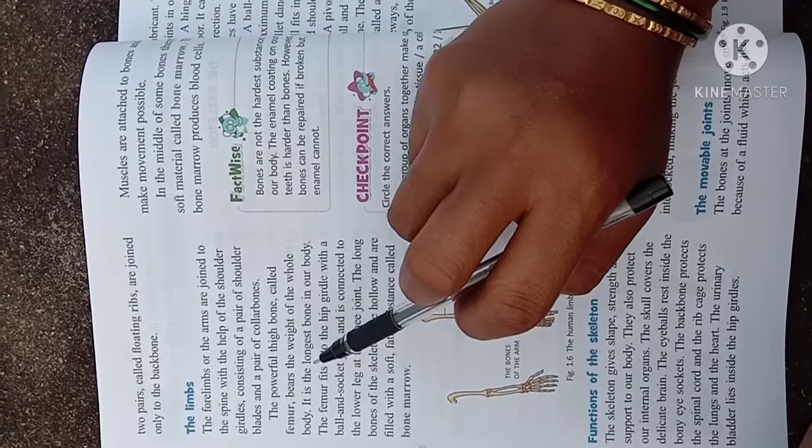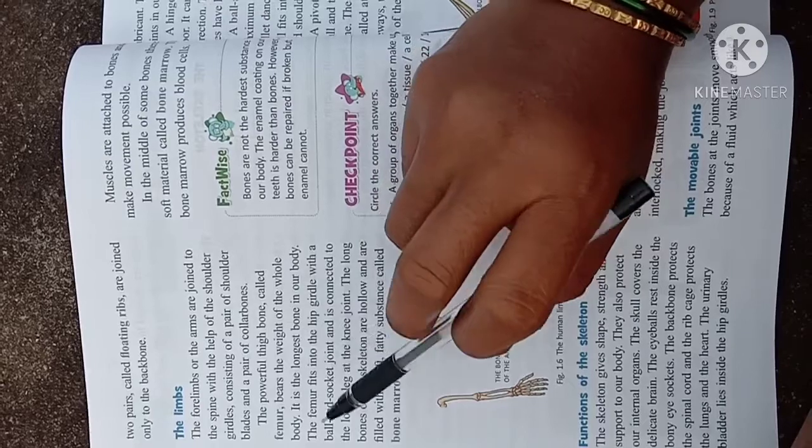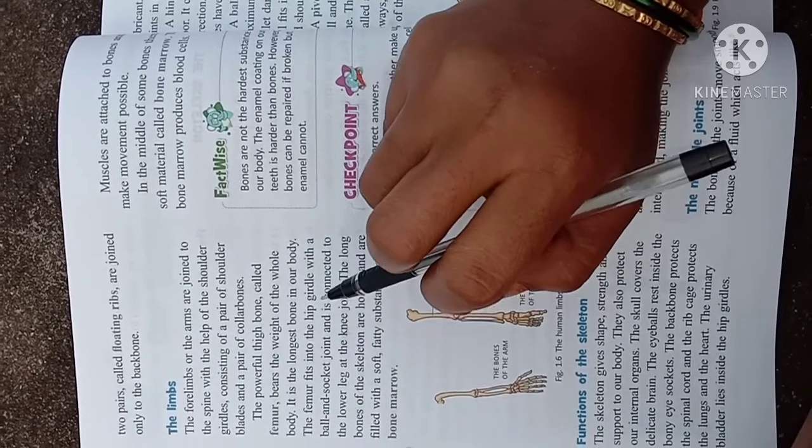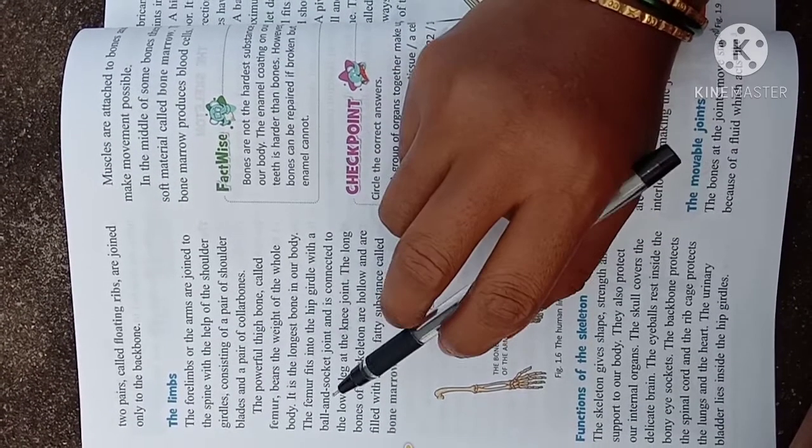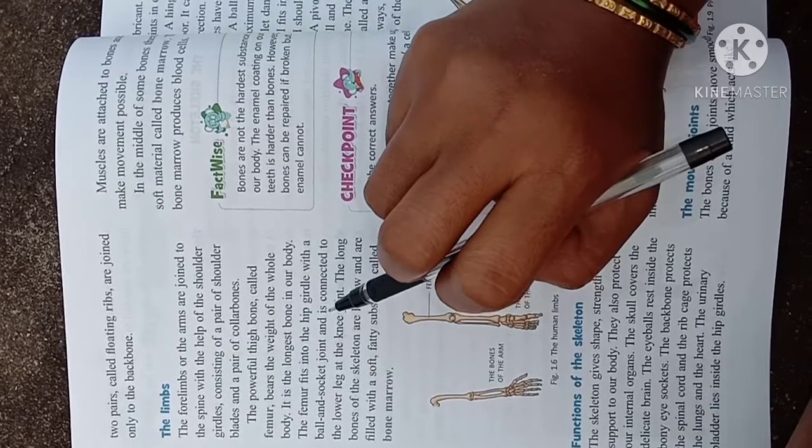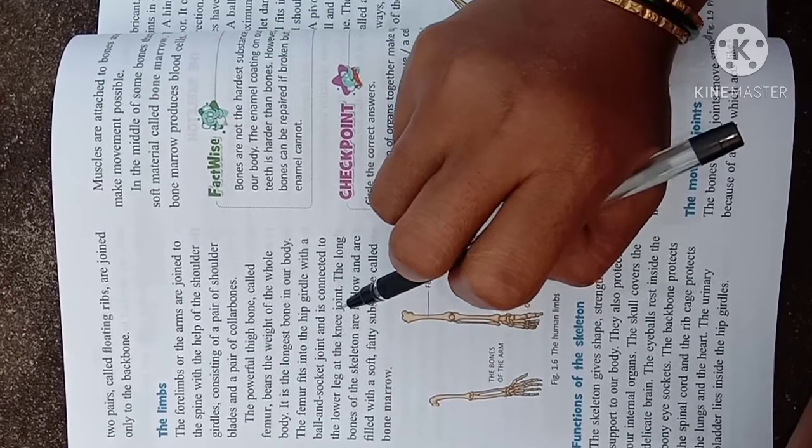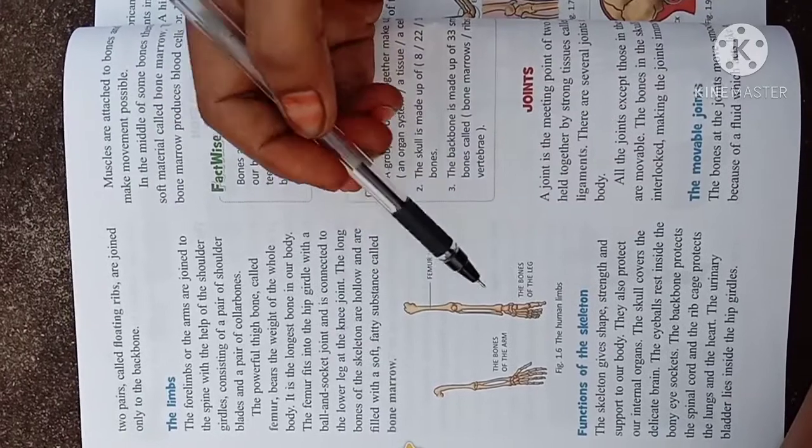The femur fits into the hip girdle with a ball and socket joint and it is connected to the lower leg at the knee joint. So here we can see the bones of the leg and also this is the femur.